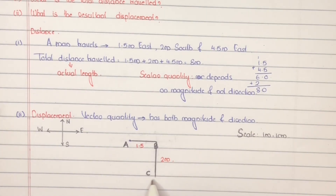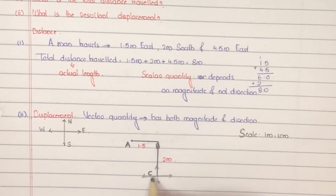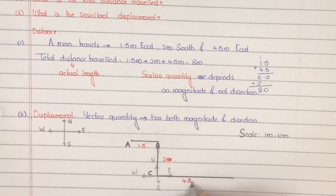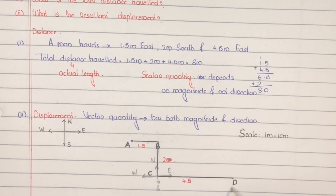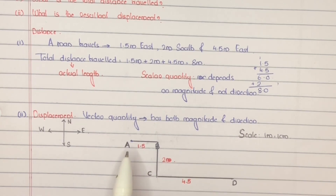He reaches at point C. Finally, 4.5 meter towards east — towards right side. Draw 4.5 centimeter and mark this point as D. He reaches at point D. Displacement depends only on the initial and final position of the moving body — it does not depend upon the path followed.